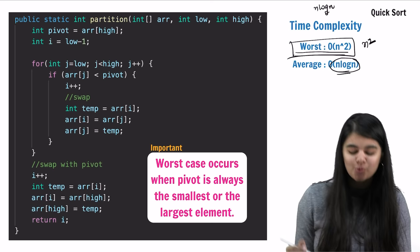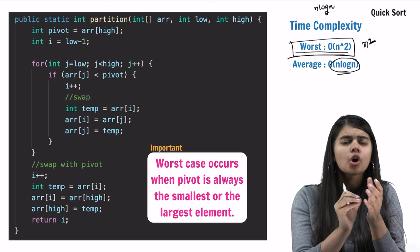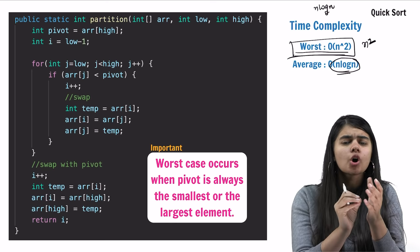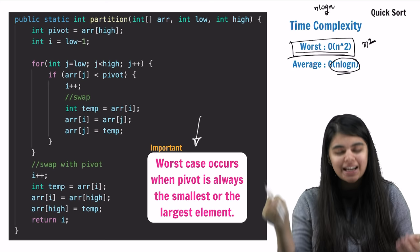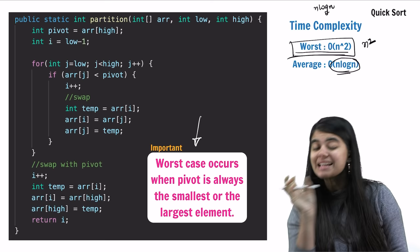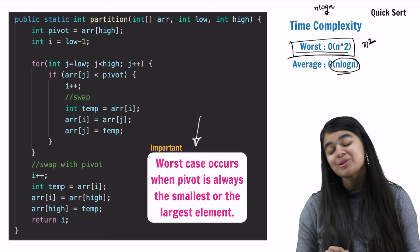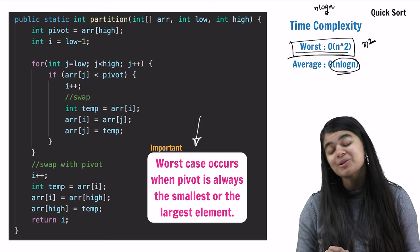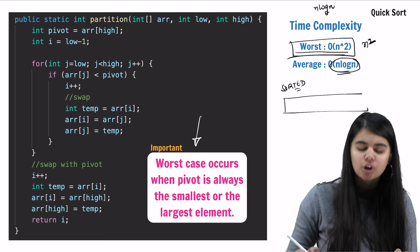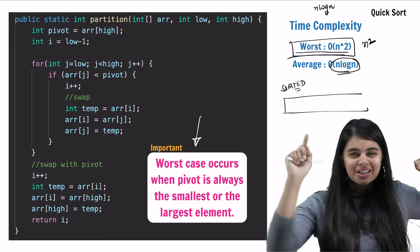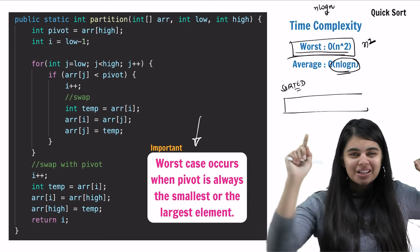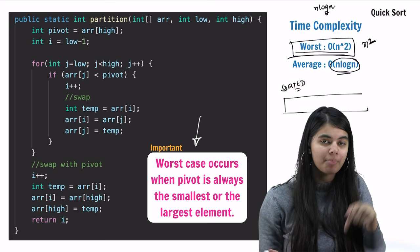Worst cases are those where every time our pivot becomes either the smallest element or the largest element. This is the most important tip, and this was actually the question asked in an interview: in which case does quicksort get its worst time complexity? The answer: when every time the pivot is either the smallest or the largest element.